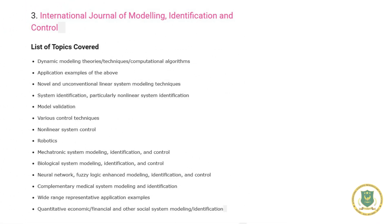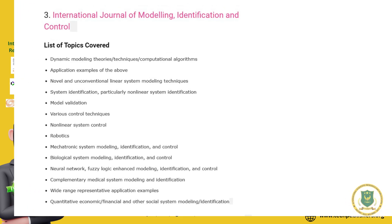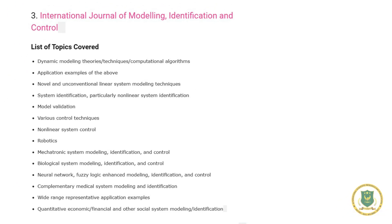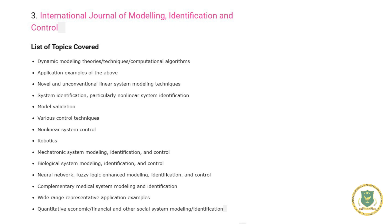Number three: International Journal of Modeling, Identification and Control. Topics covered include dynamic modeling theories, techniques and computational algorithms, application examples, novel and unconventional linear systems modeling techniques, system identification, non-linear system identification, model validation, various control techniques, non-linear system control and robotics systems, mechatronic system modeling, identification and control, biological system modeling and control, neural network and fuzzy logic enhanced modeling, complementary medical system modeling, and quantitative economic or financial system modeling and identification.